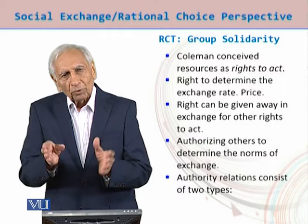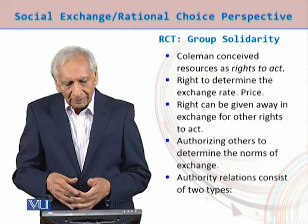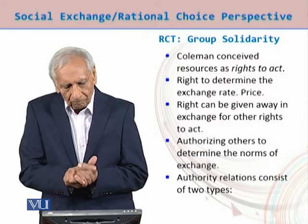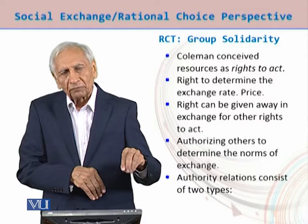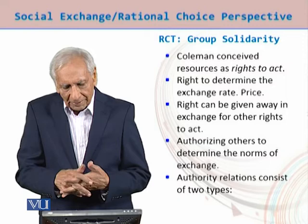Individuals can determine the rate of exchange themselves. If it is a small group, individuals will do it; if the group is larger, then norms come into play. That right can be given in exchange for other rights to act, and others are authorized to determine the norms of exchange — the rate of exchange, how that exchange is to be carried out, and in case of disputes, how those disputes are to be settled. That authority consists of two types.